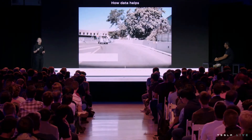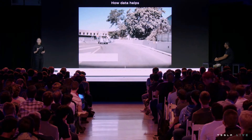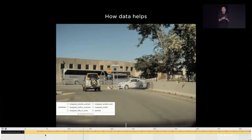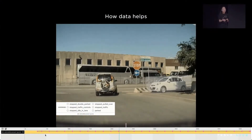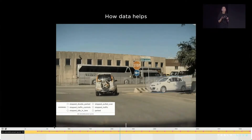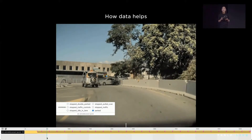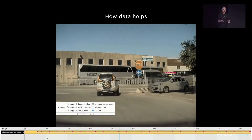We're going to show you how we deterministically solve interventions via data and walk you through the life of this particular clip. In this scenario, autopilot is approaching a turn and incorrectly predicts that crossing vehicle as stopped for traffic, and thus a vehicle that we would slow down for. In reality, there's nobody in the car — it's just awkwardly parked.